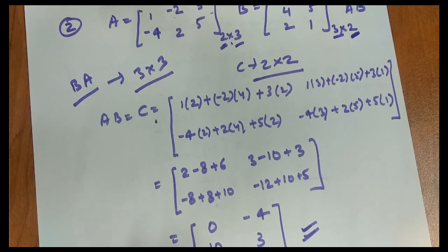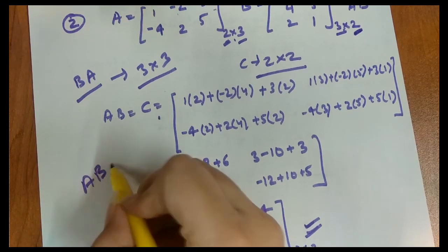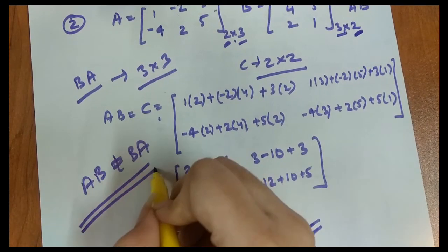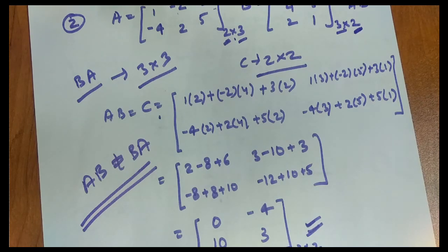So how will the elements be the same? So it is not commutative. AB is not equal to BA. It doesn't follow the commutative law. I hope your matrix multiplication is clear.